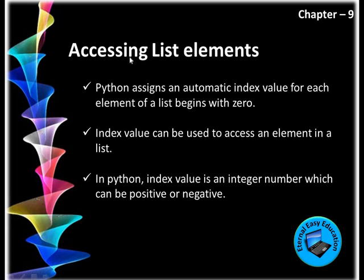How to access elements in a list: Python assigns an automatic index value for each element of the list, beginning with zero — just like arrays in C++. The index value can be used to access an element in a list. In Python, the index value is an integer that can be positive or negative, the same as you learned for strings.